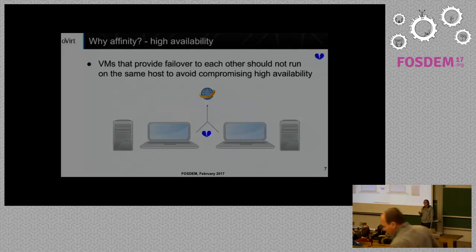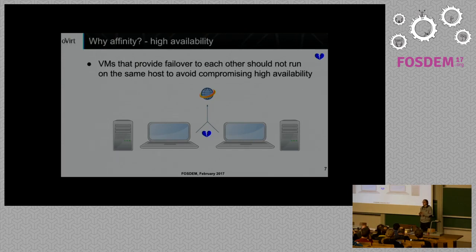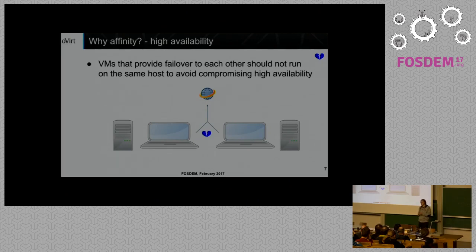For high availability considerations: the first presentation today was talking about OpenShift running on top of oVirt, running containers inside virtual machines. Kubernetes already provides high availability with a replication manager. But what happens when the hosting virtual machines run on the same physical host and Kubernetes places your containers on those two co-located VMs? The physical host can go down and both replicas will die at the same instant, compromising high availability. If you define negative affinity between those two VMs, they will never be on the same host, which maintains high availability.